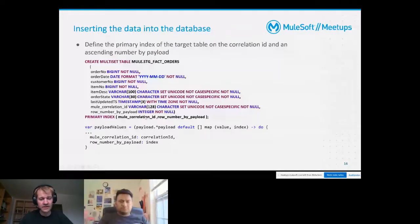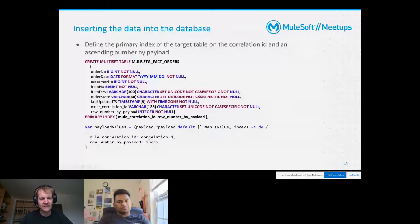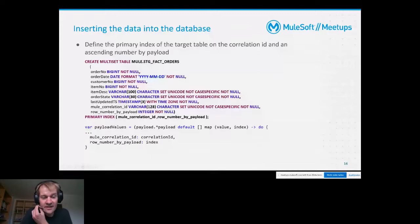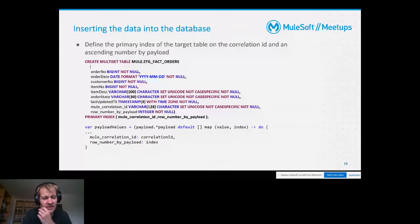The best combination in my opinion is to use the Mule correlation ID, which is expected to be unique per API call, and an ascending row number per payload. The Mule correlation ID is available via the standard expression correlationId, and the ascending number by payload can be implemented using the index of the actual array you are processing. When designing your target table this way, you maximize the chance of maximum parallelism as there will be no delay due to hash collisions.